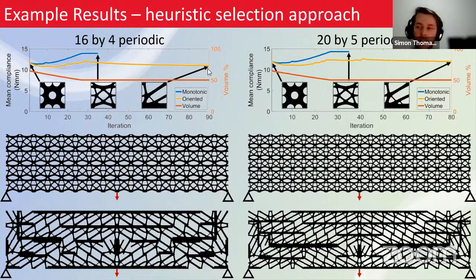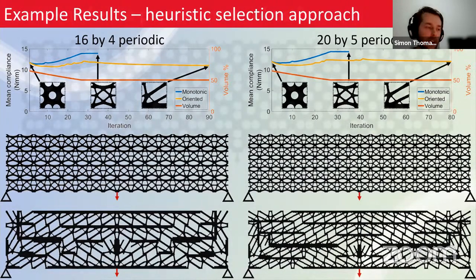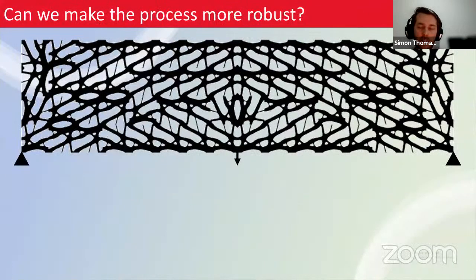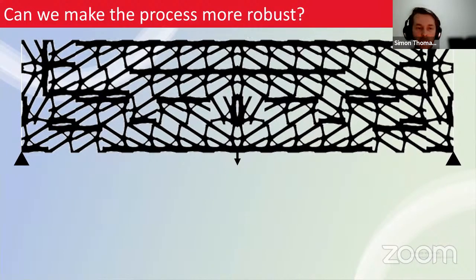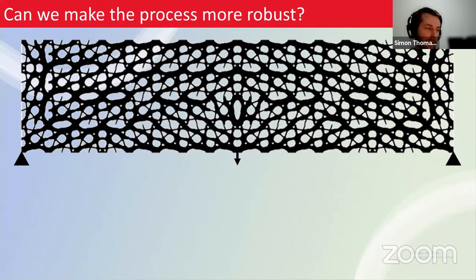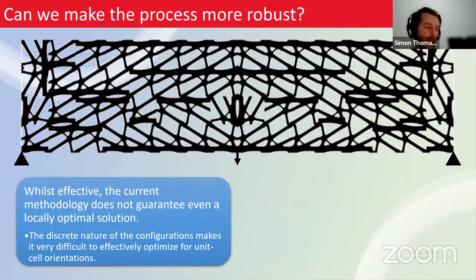At the bottom are our derived oriented periodic structures. The graphs show oriented structures achieve significantly lower compliance — compliance reductions of between 15 and 25 percent compared to uniform translational structures. The heuristic method updates the orientation state throughout optimization, but this does not guarantee even a locally optimal solution as implemented in our paper.